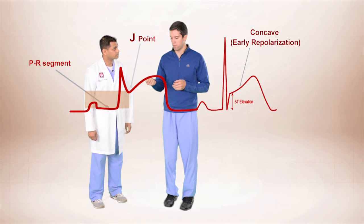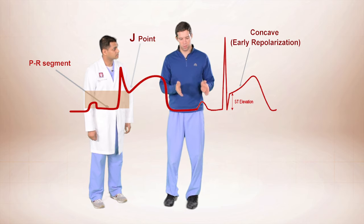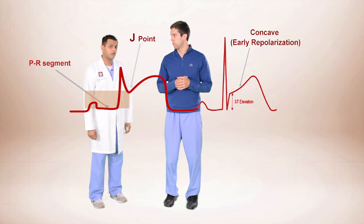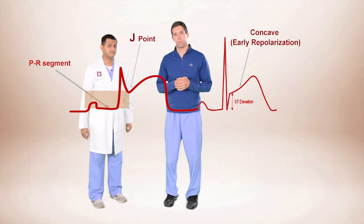So if that's convex, that means that this one in front of me is concave and this would be less concerning for an MI. You got it. But always remember to clinically correlate these findings.